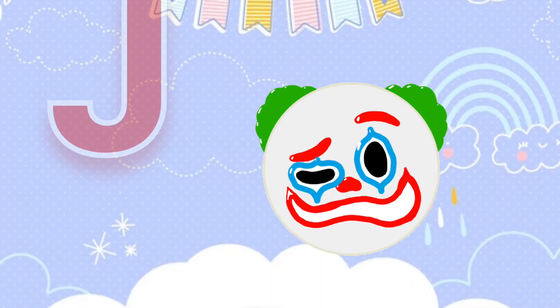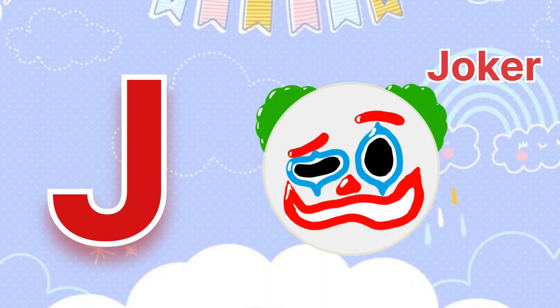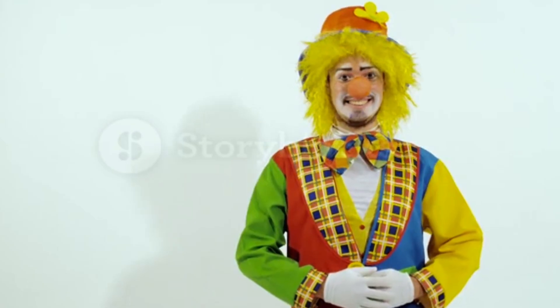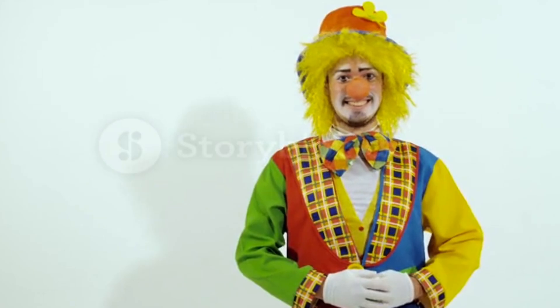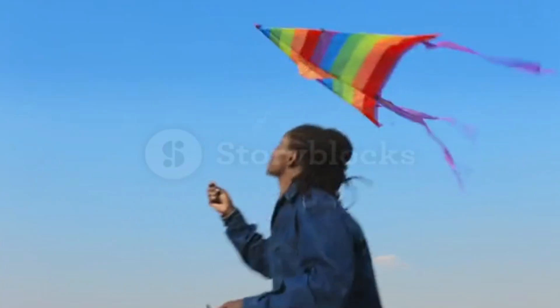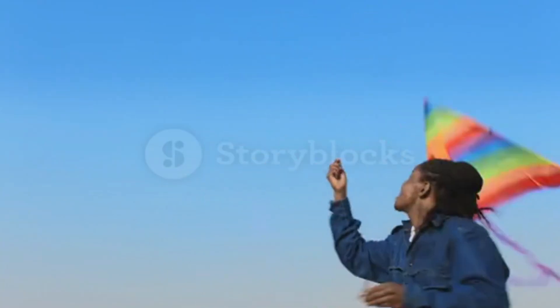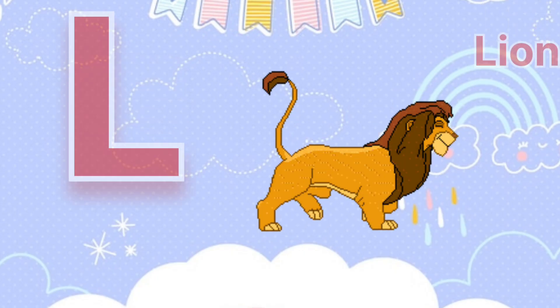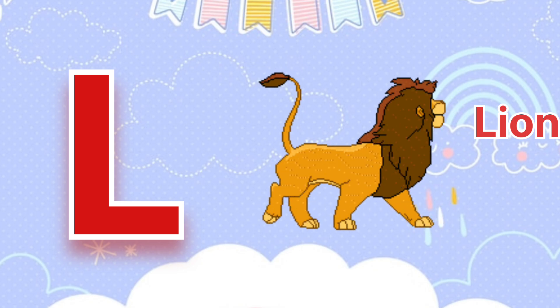J is for Joker. K is for Kite. K is for Kite. L is for Lion.